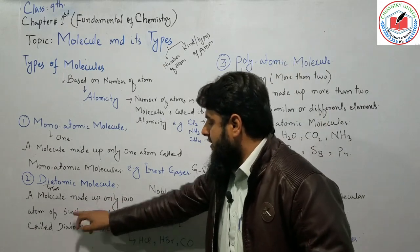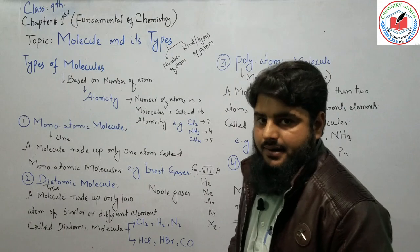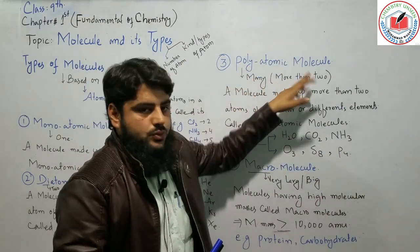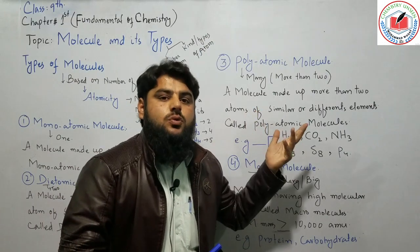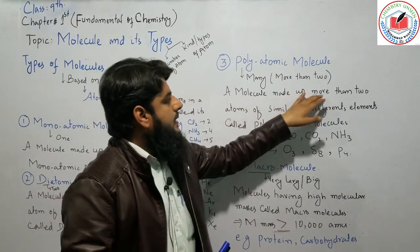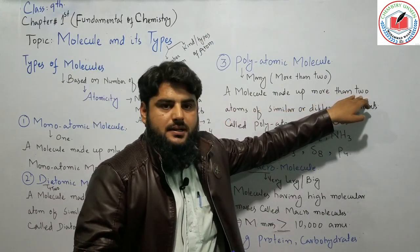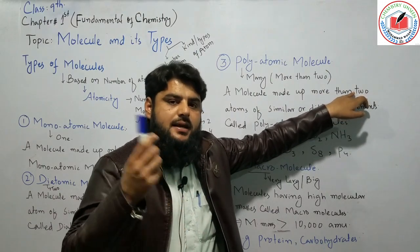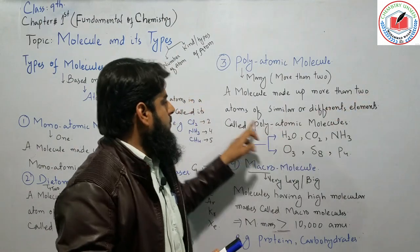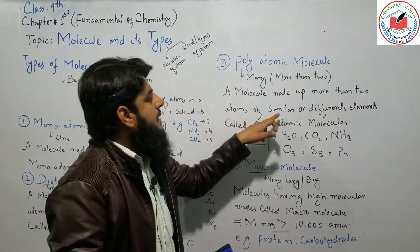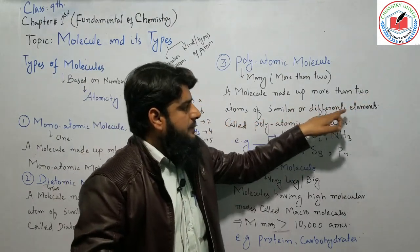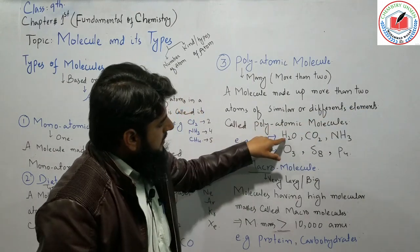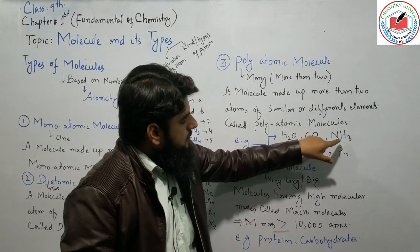When a molecule contains more than two atoms — three, four, five, or more — it is called a polyatomic molecule. The atoms may be similar or different elements. Examples include water (H2O), carbon dioxide (CO2), and ammonia (NH3).